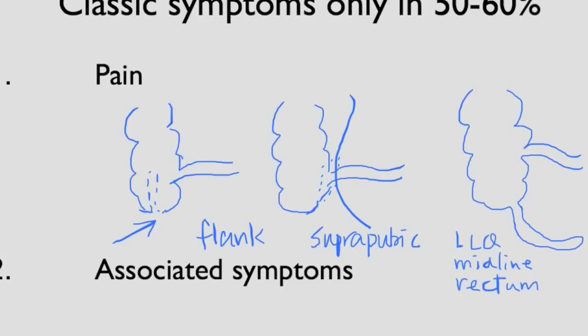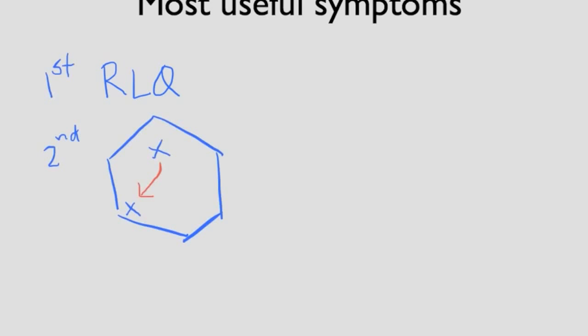Not all patients will have the fever, vomiting, or anorexia. Of all the symptoms, the most helpful — with the highest likelihood ratio — is right lower quadrant pain. The second most helpful is pain migrating from the periumbilical area to the right lower quadrant. The third most useful is pain before vomiting. But because of anatomical variation, not all patients will have pain where we expect it.